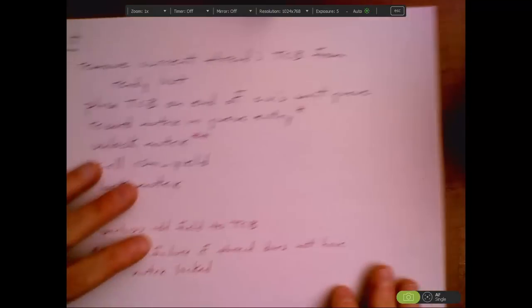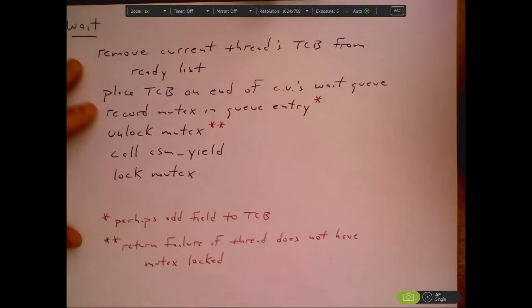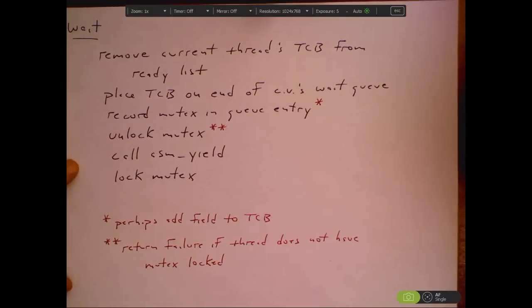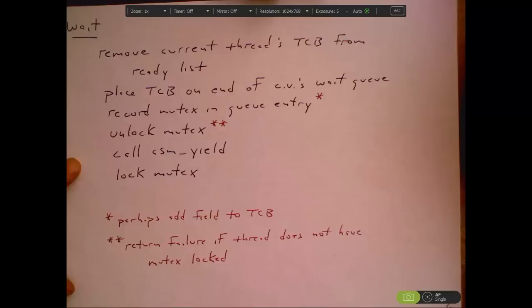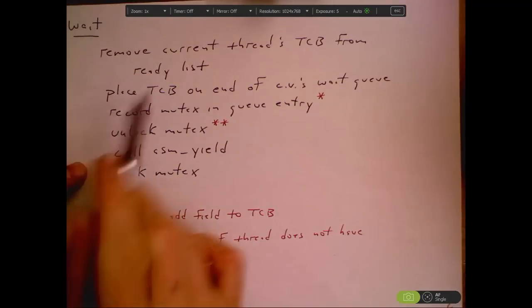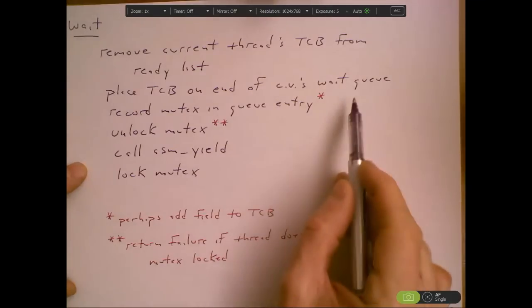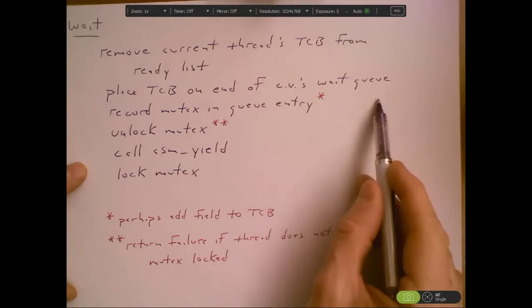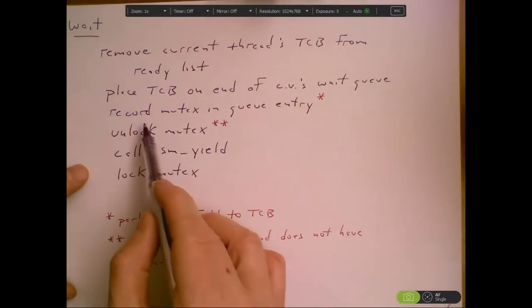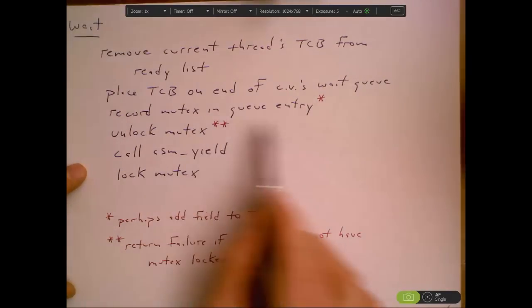Okay, so let's look at pseudocode for wait. We remove the current thread's TCB from the ready list. We're doing a wait, so we're going to block. We remove our current thread's TCB from the ready list. We place that TCB on the end of the condition variable's wait queue, and we've got to remember to record the mutex. The mutex would be a parameter to the wait primitive.